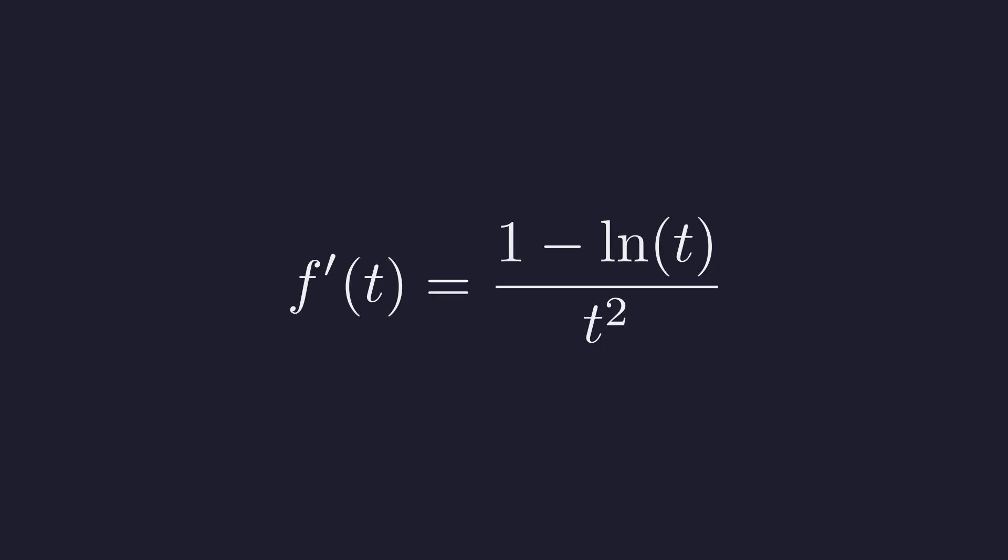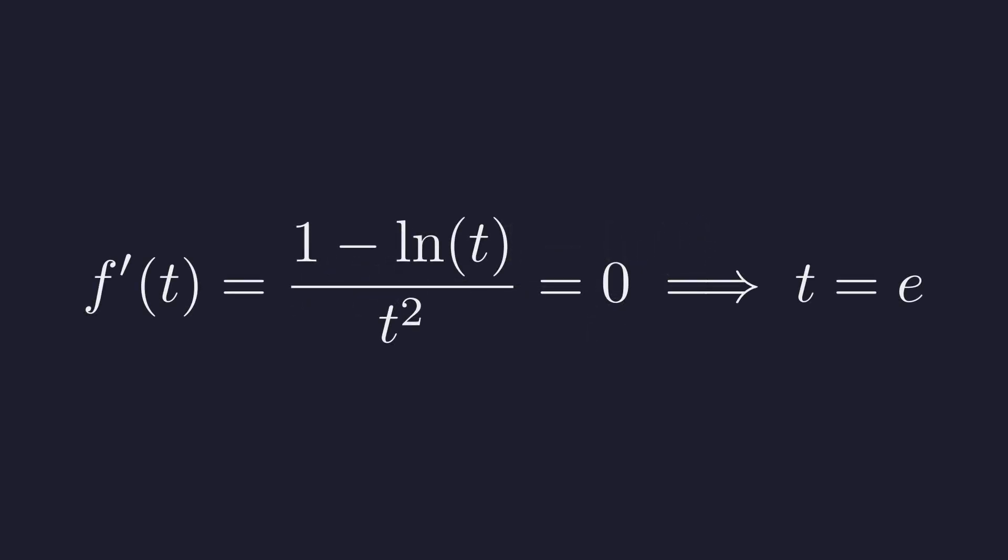The derivative of f tells us the slope of the curve at any point. It's like asking: is the function going up or down? When we calculate it, we get (1 - ln(t)) all divided by t². At the peak, the slope is zero. Setting the derivative to zero, we find that happens when the natural log of t equals 1. And what number has a natural log of 1? That's Euler's number e, approximately 2.718.